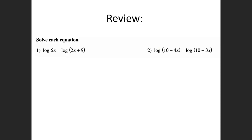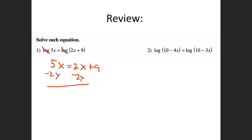Before spring break, we solved logarithmic equations where if you had a log on one side and a log on the other side, we could just cross them off. That would leave us with 5x equals 2x plus 9, then subtract 2x from both sides, and we'd end up with 3x equals 9, so x equals 3. We also did exponents that had the same base — they have to have the same base.